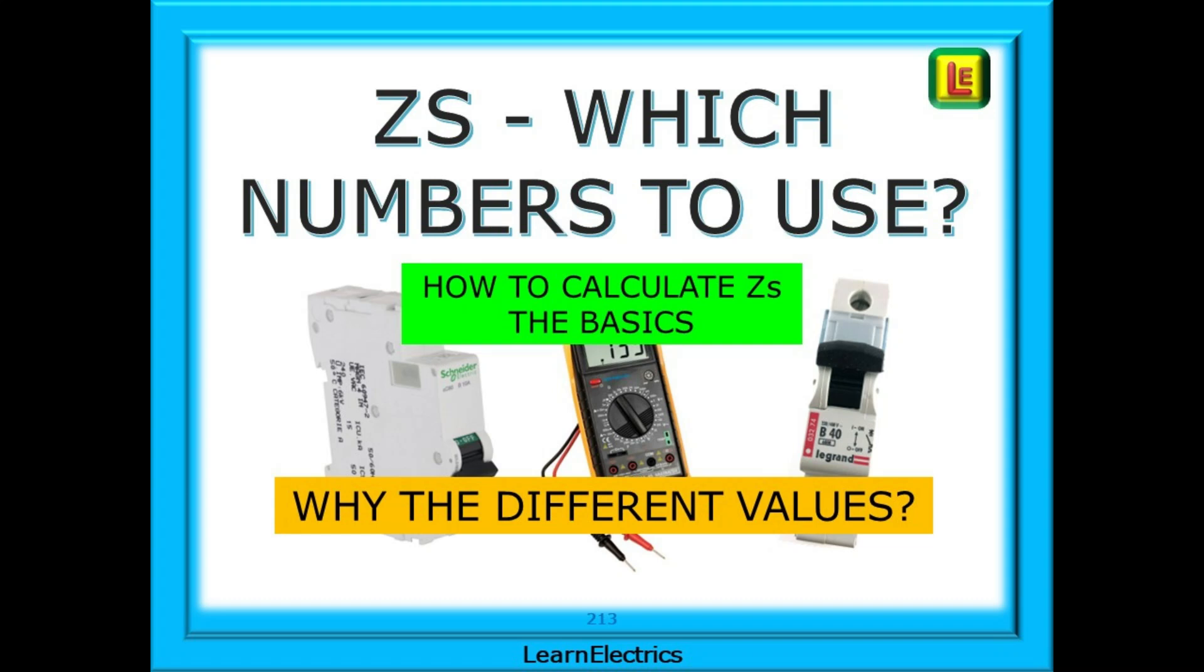We are often asked which ZS figures to use. Yes, it's true that the books have different ZS numbers for the same circuit breaker, but which ones do we use? And does it matter?